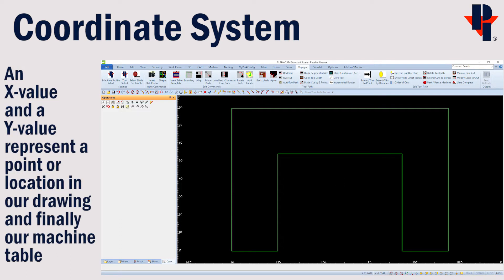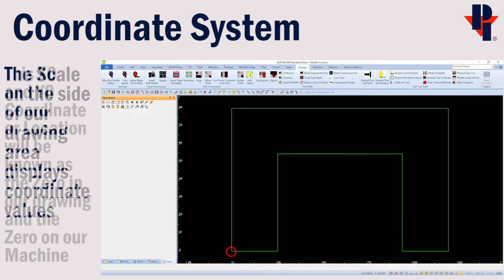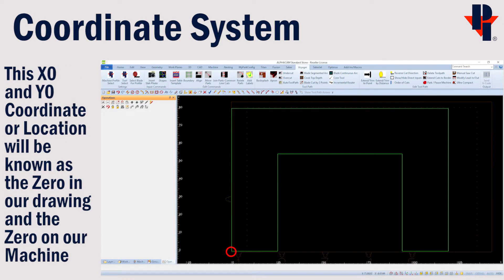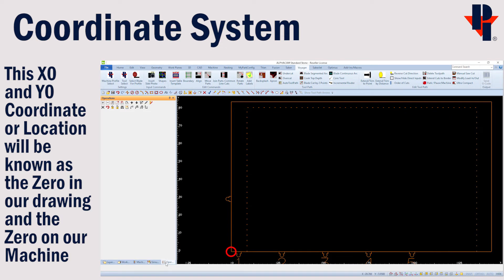A coordinate is an x and y value specifying a point or a location. x0, y0 is a coordinate. x0, y0 also represents the lower left hand corner of our machine's table.